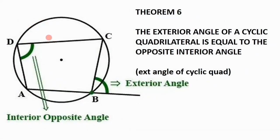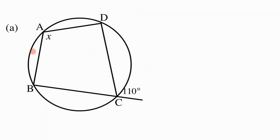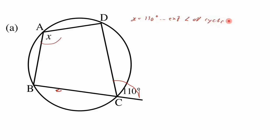In today's lesson we're looking at Theorem 6, which states that the exterior angle of a cyclic quadrilateral is equal to the opposite interior angle. In this diagram we are shown that the exterior angle equals the opposite interior angle. For exercise a, we have 110 degrees as the exterior angle, and from the theorem we know that x equals 110 degrees — exterior angle of cyclic quad.